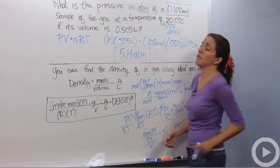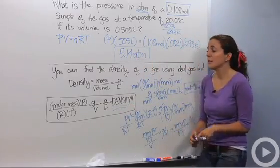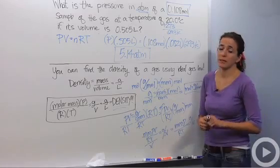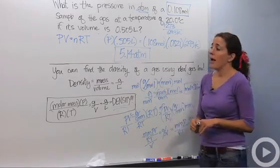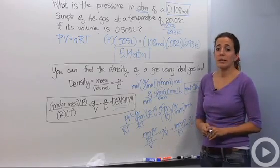Yay, we found density using PV equals NRT, our ideal gas law. So there's lots of fun things you can do with the ideal gas law, lots of fun different things you can do, density being one of them, and the ideal gas law is used in a lot of different ways.